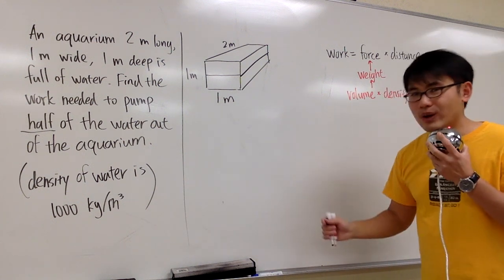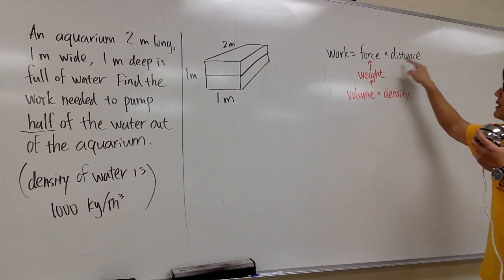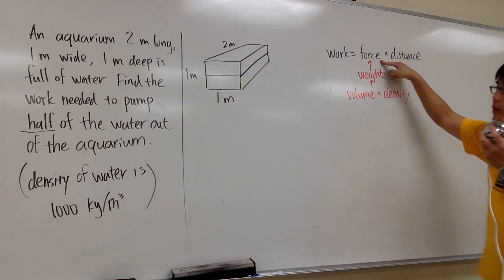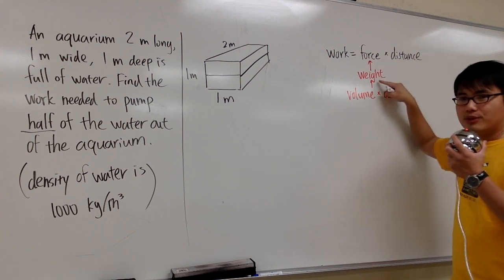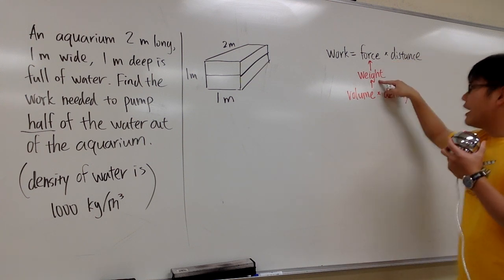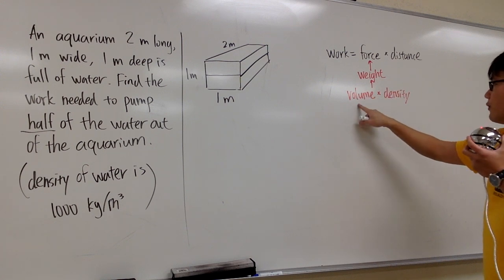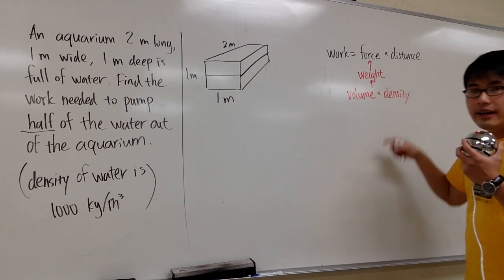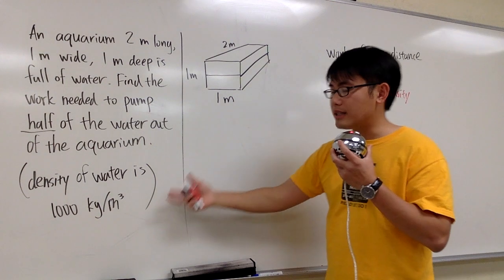What is work? Work is force times distance. In this situation, to find out the force, it's just pretty much the weight. And for the weight, it's volume times the density. You just have to pay attention to the units that we are using.